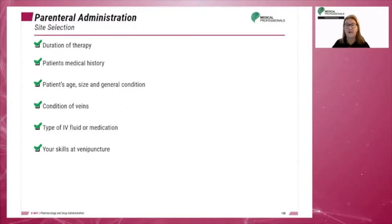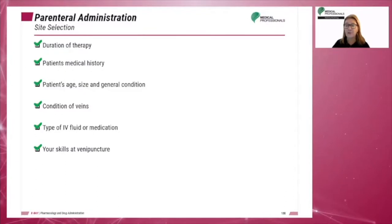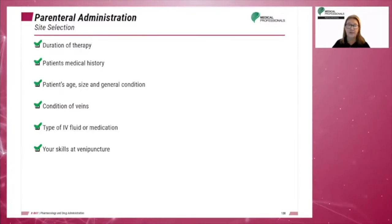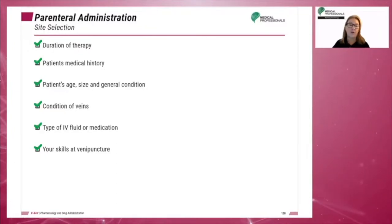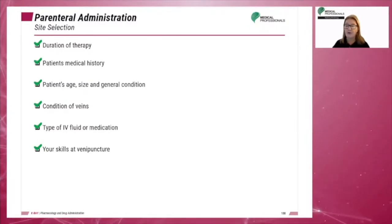Conditions of veins: veins in the lower extremities are usually the last resort. Avoid veins below a phlebotic area, bifurcation veins, and sclerosed or thrombosed veins. Avoid veins that are tortuous or hard to see or palpate, repeatedly used veins, and veins over arteries. The general rule of thumb is to select the lowest site possible so that, if necessary, the site can be moved to a more superior position.